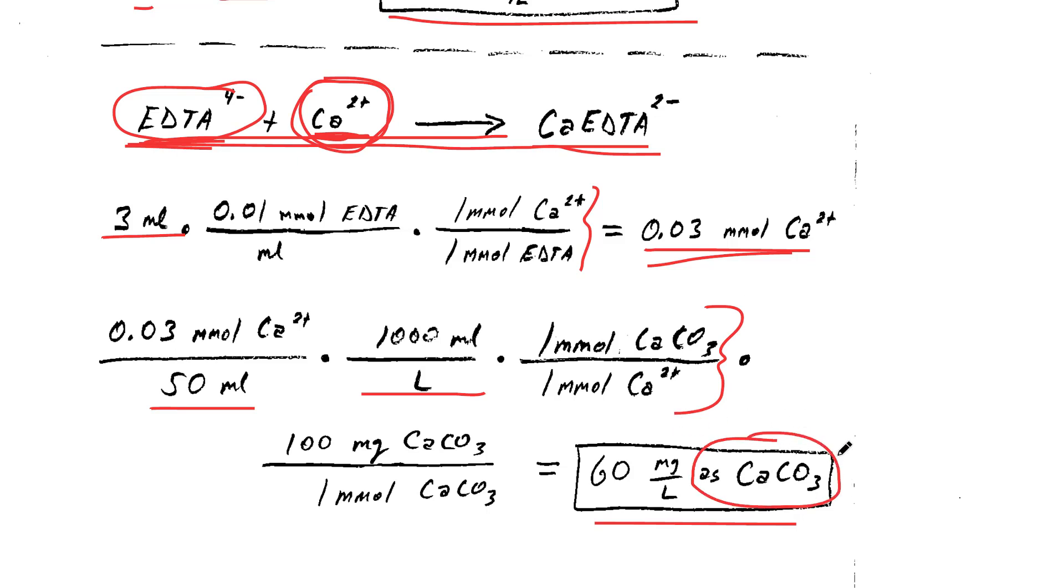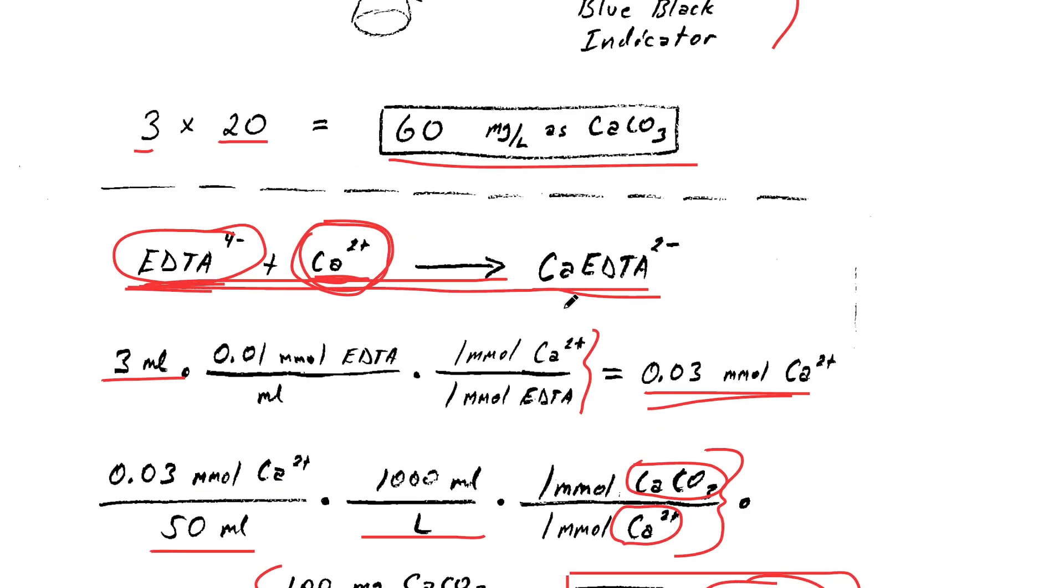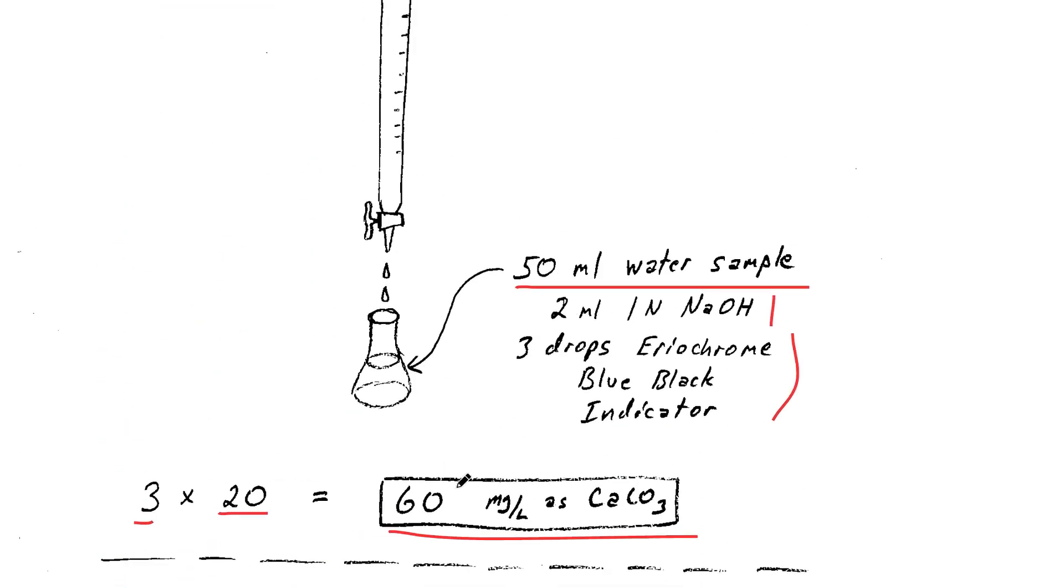It's not calcium carbonate necessarily in the solution, but if we have a millimole of calcium, we can say that that is sort of equivalent to a millimole of calcium carbonate. And then we use our 100 milligrams per millimole molecular weight of calcium carbonate to give us our final result of 60 milligrams per liter, which is the same as our quick and dirty method of multiplying times 20.